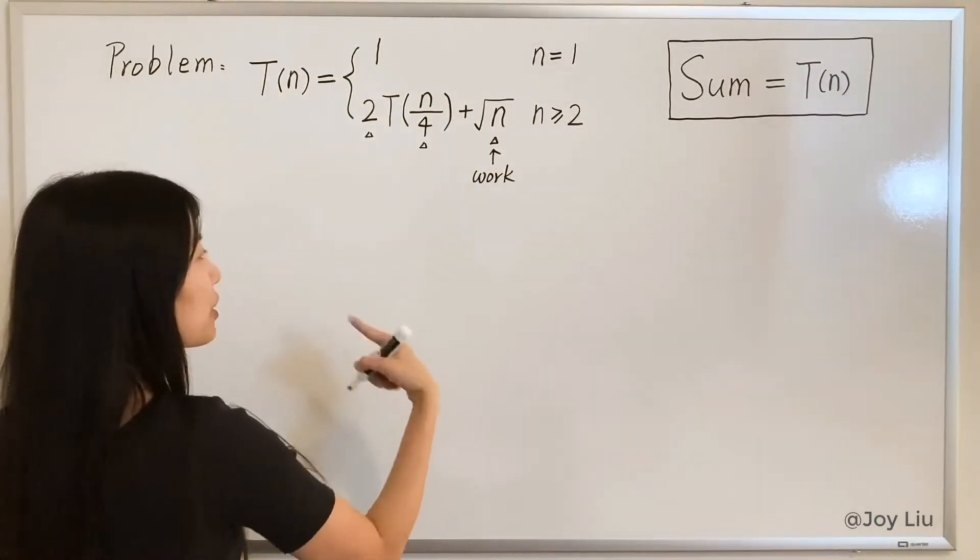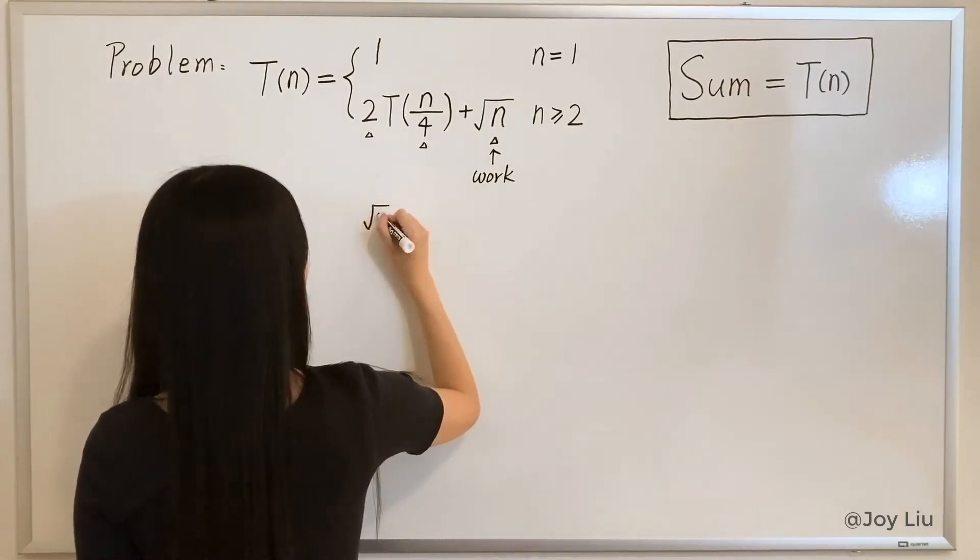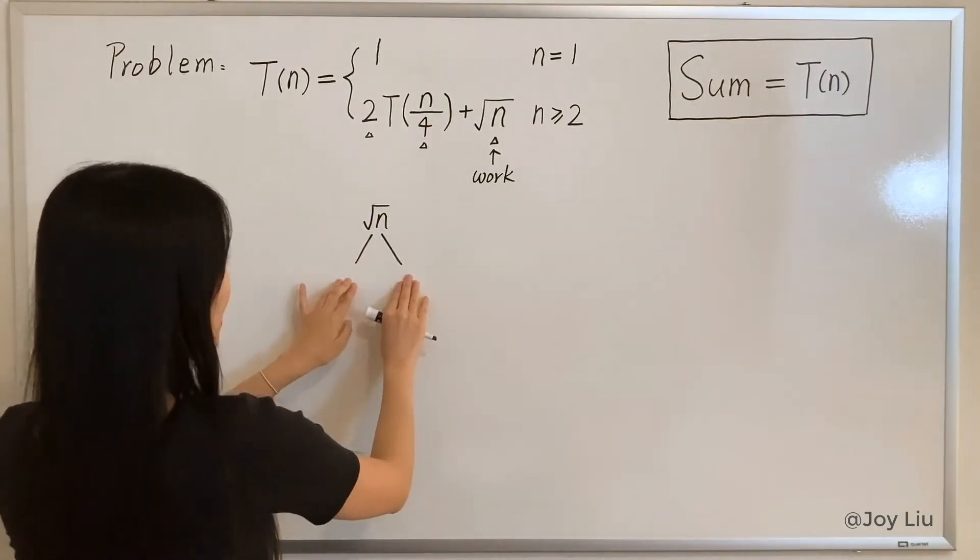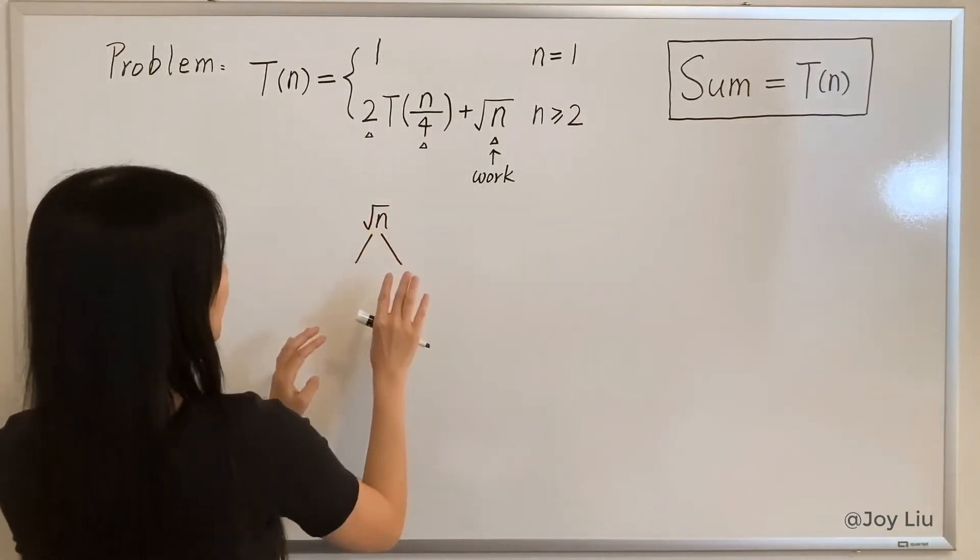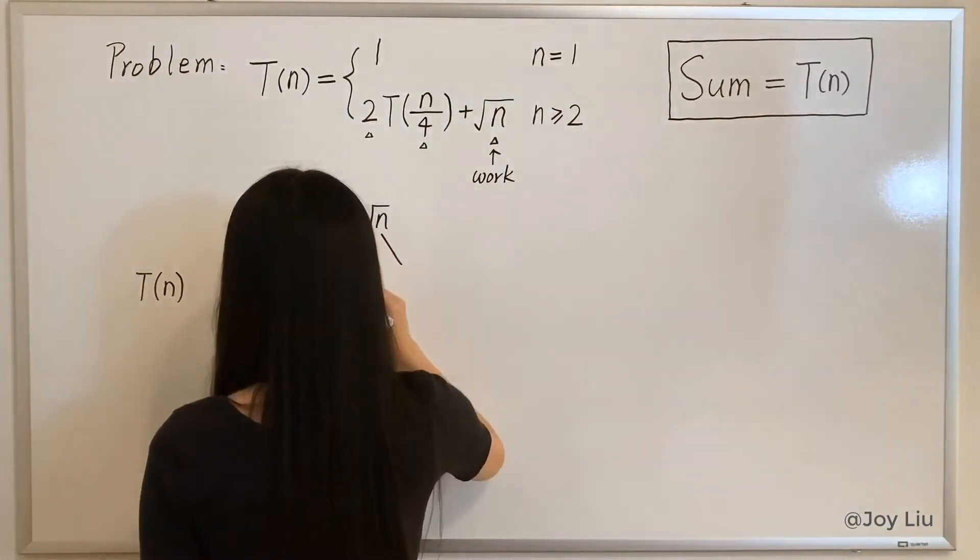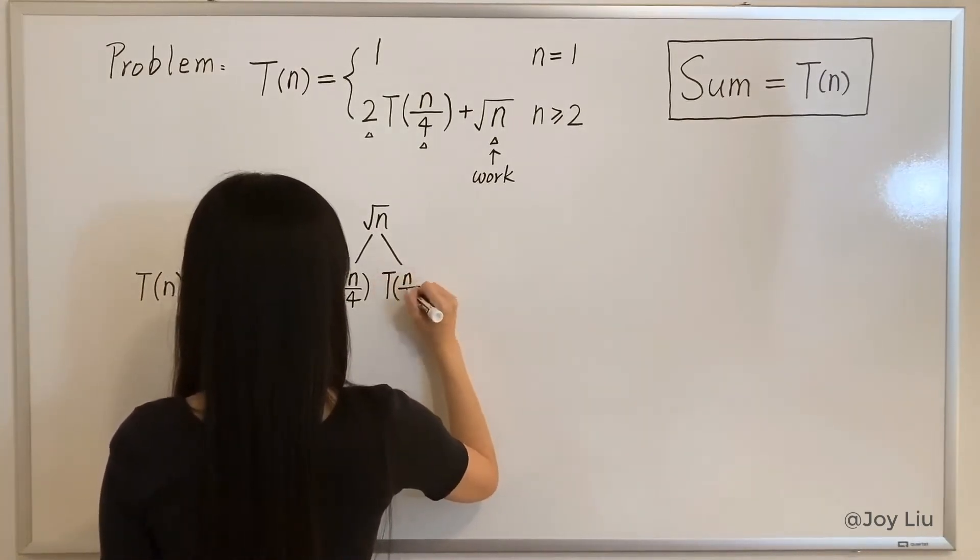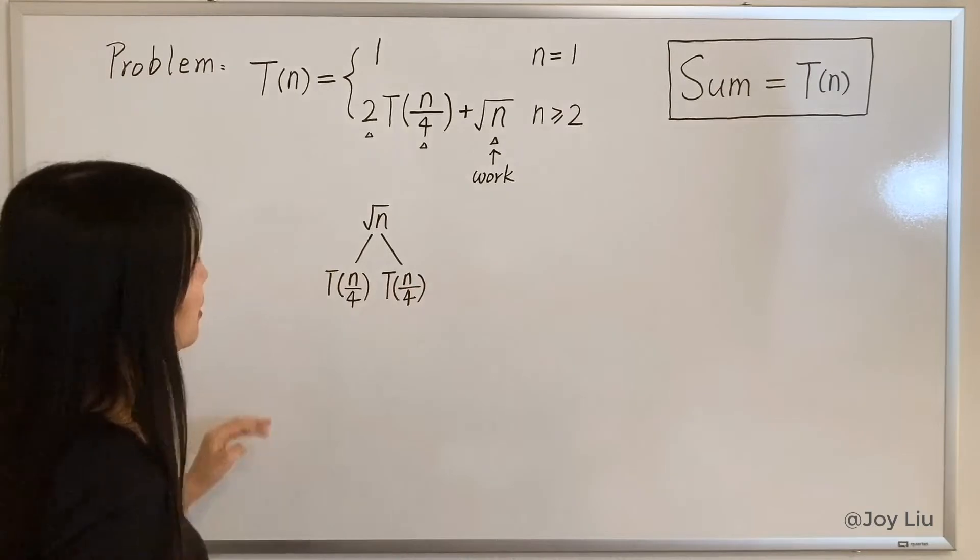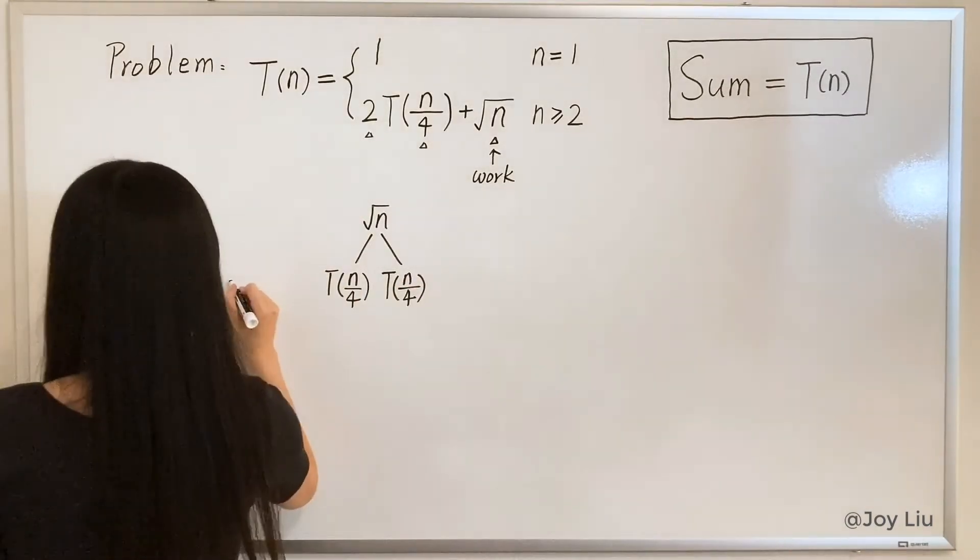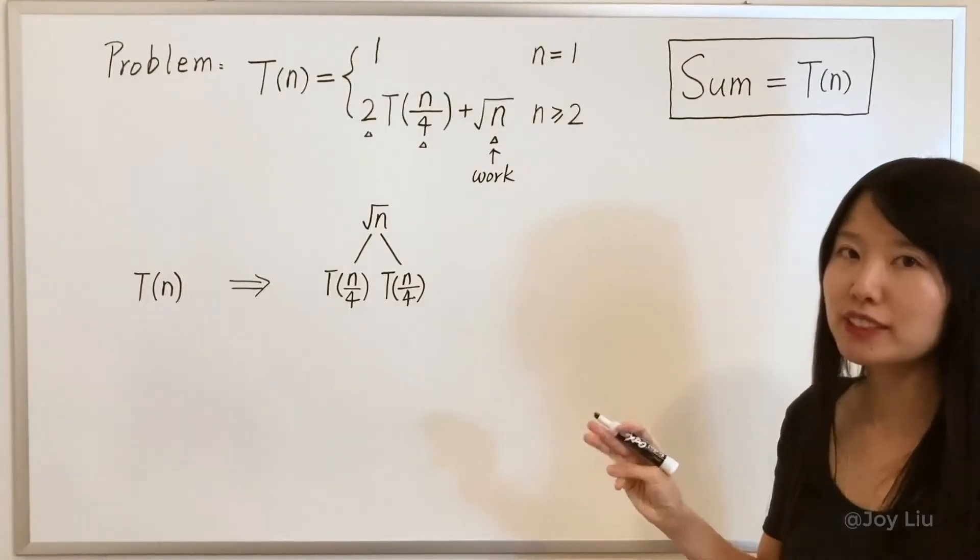How about two levels? To make it simple, we call this item square root of n work. For a tree of two levels, the root would be square root of n. We put the work here. What are the children? So if you add these items here that would be T(n), it's just T(n/4) and another one. So if you add everything together that would be T(n). I'll draw an arrow here just to show how we evolved.